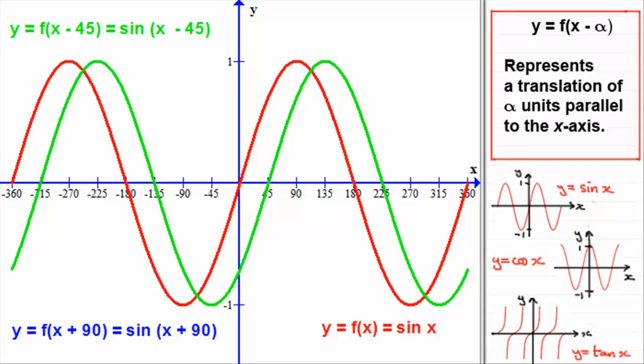Let's look at y equals f of x plus 90, replacing the x in sin x with x plus 90, giving us sin of x plus 90. When we compare this to the transformation, alpha is now minus 90, making the plus 90 that we have here. So if alpha is minus 90, we're going to translate the graph minus 90 degrees parallel to the x-axis. The red graph of sin x is now going to shift 90 degrees to the left.